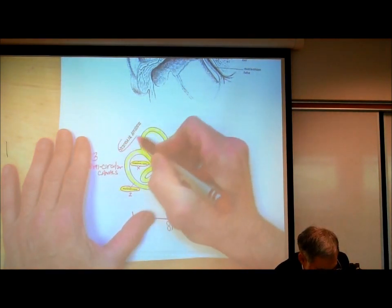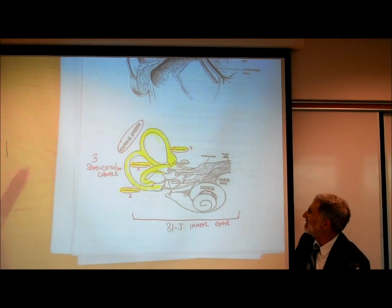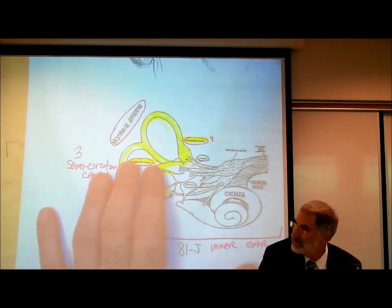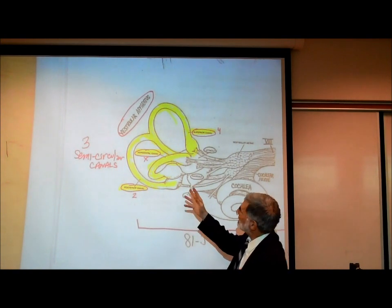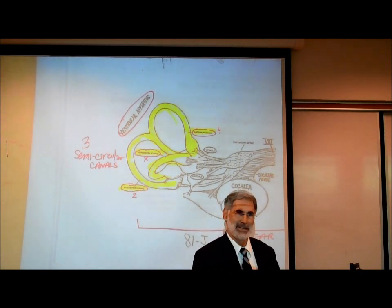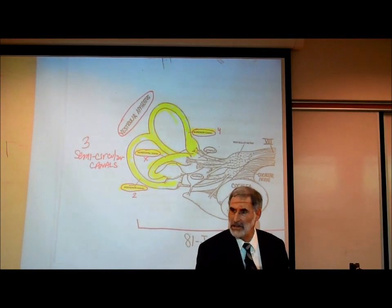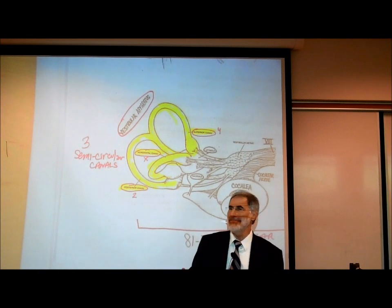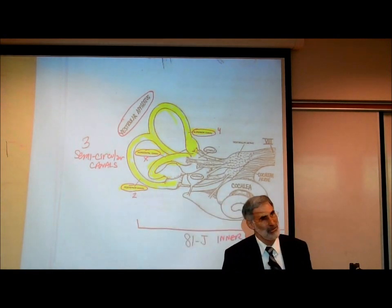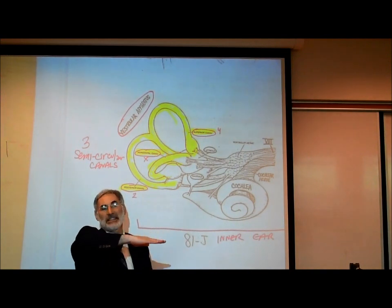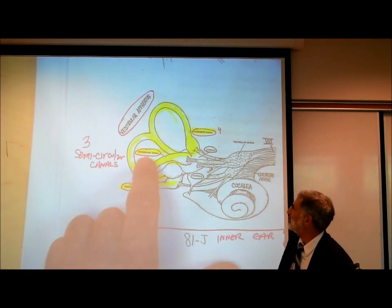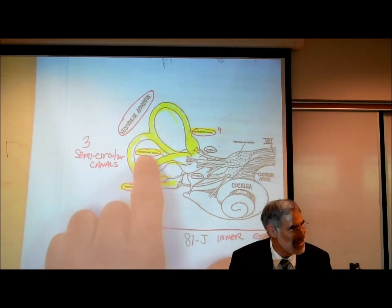The vestibular apparatus consists of three semicircular canals oriented in the three planes or dimensions of space. We've all been watching 3D movies. The three dimensions are: I'm moving horizontally — we might call that the x-axis, and one of these canals is labeled the horizontal canal.